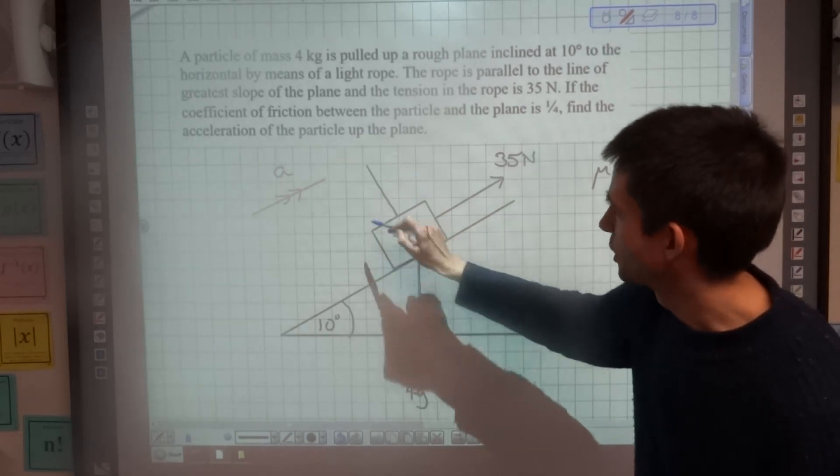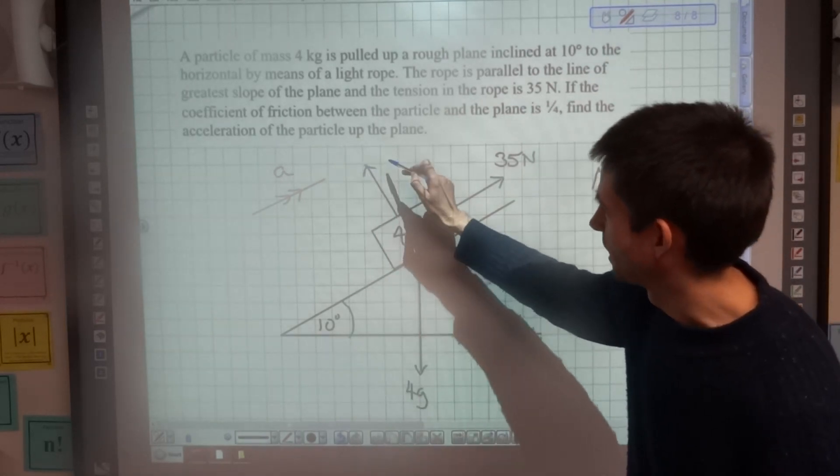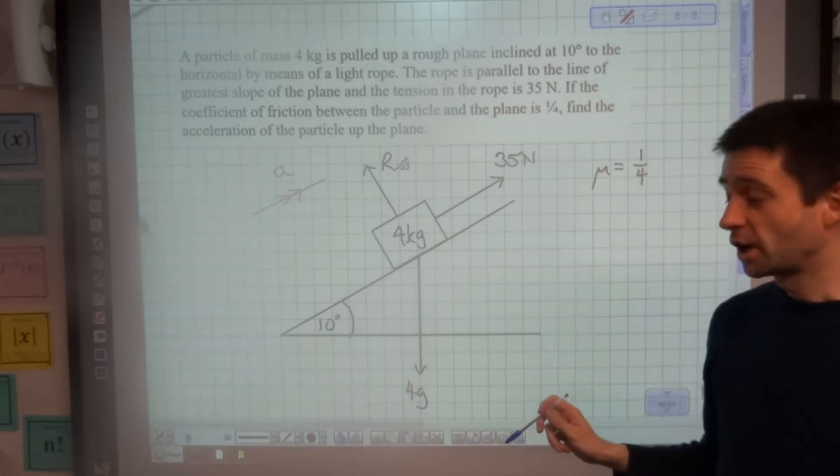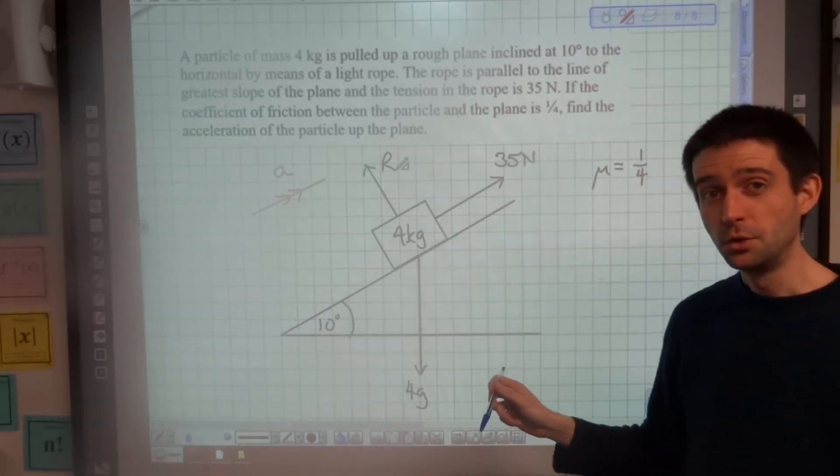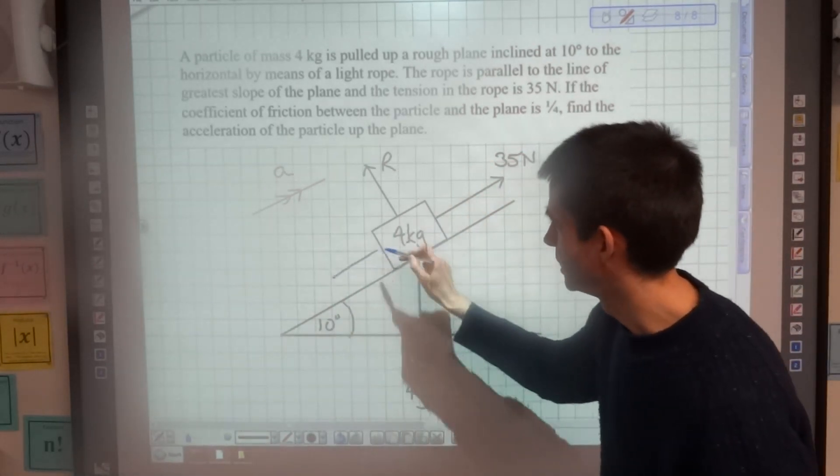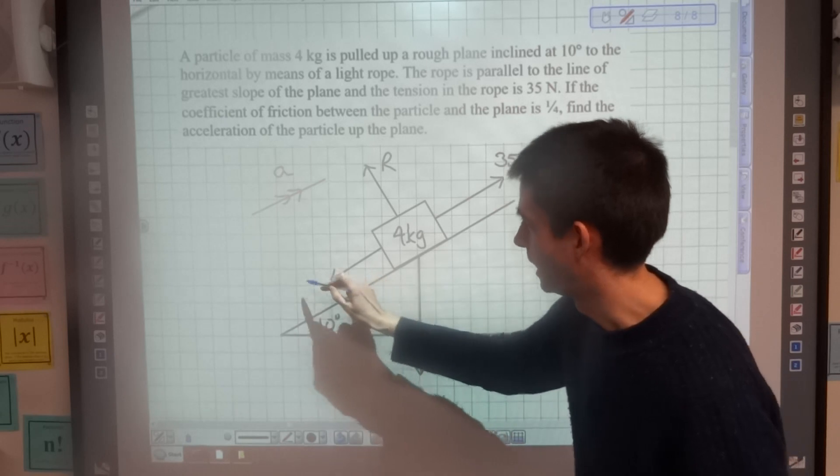We've got a normal reaction force R which is acting perpendicular to the slope, and we're going to have a force of friction as well. Now remember that friction opposes motion, so if it's accelerating up the plane, the frictional force is going to be going down the plane.